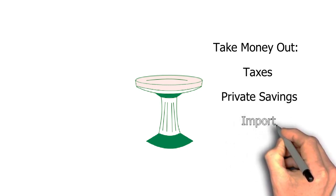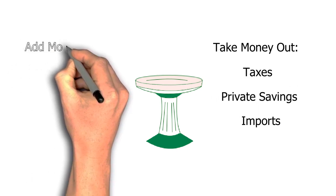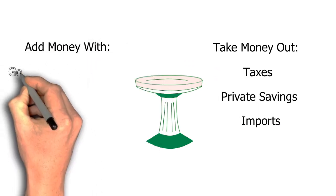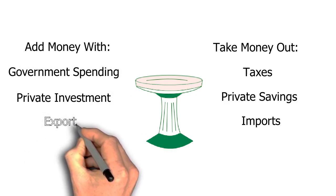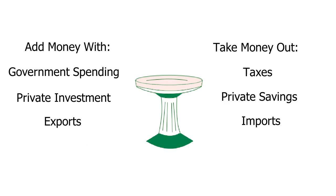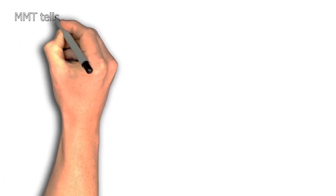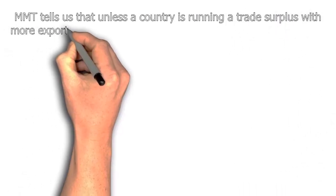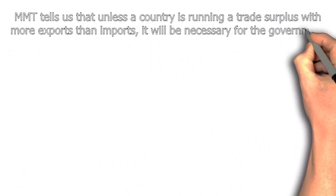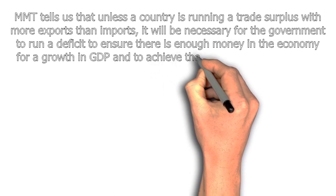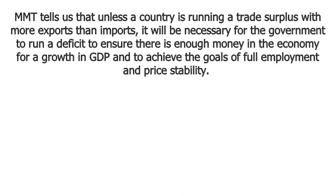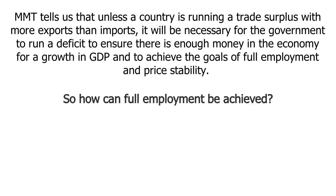Private savings that people don't spend and imports also take money out of the private economy. Alternatively, to ensure there is an adequate supply of money in the economy, the government may have to add money with more government spending. Private investment and exports also add money to the private economy. Taxes then are like a regulator that the government uses to take money out of the private sector to ensure price stability and prevent excess inflation. To recap: modern monetary theory tells us that unless a country is running a trade surplus with more exports than imports, it will be necessary for the government to run a deficit to ensure there is enough money in the economy for growth in the GDP and to achieve the goals of full employment and price stability.